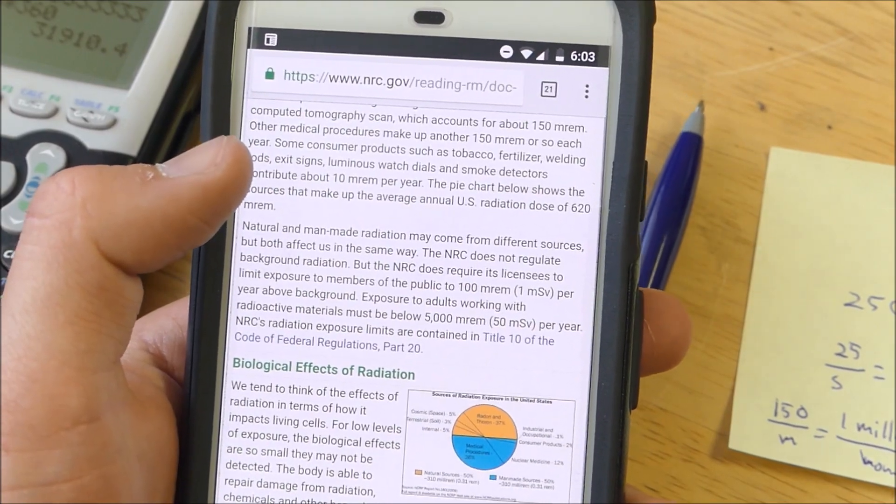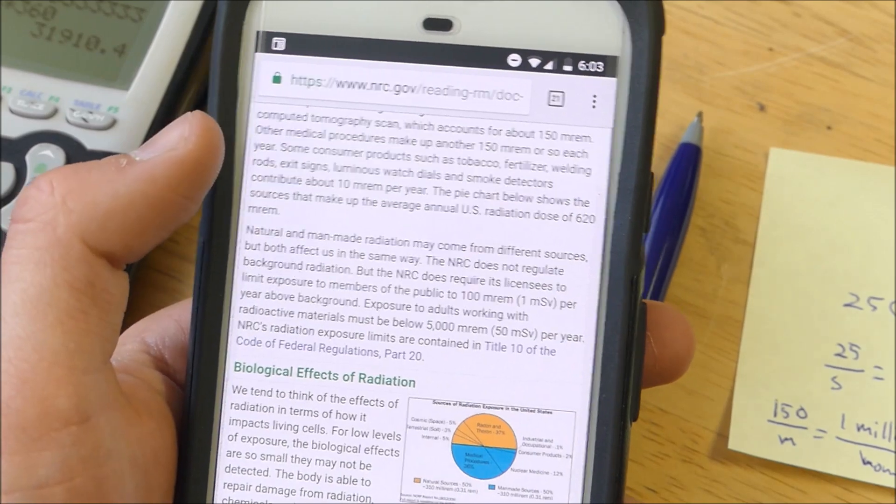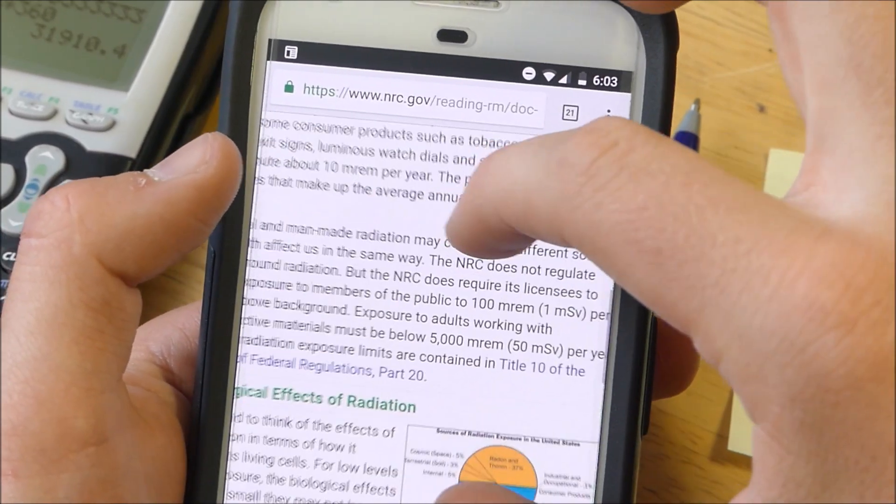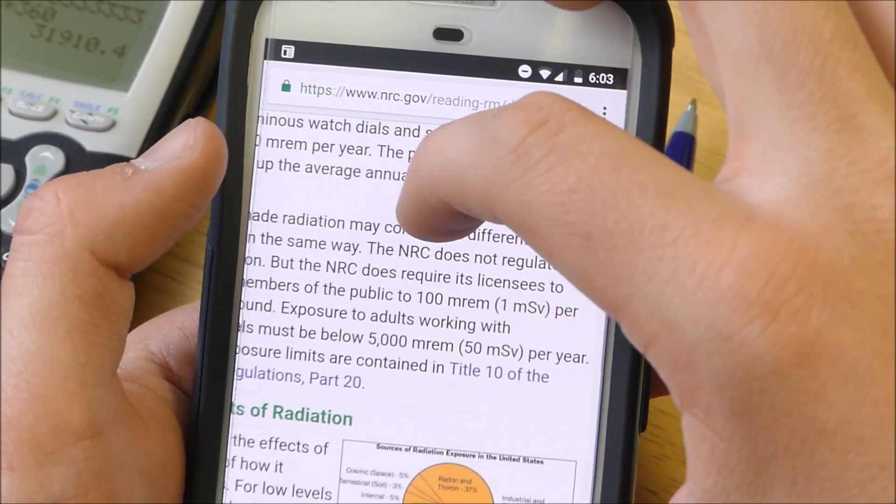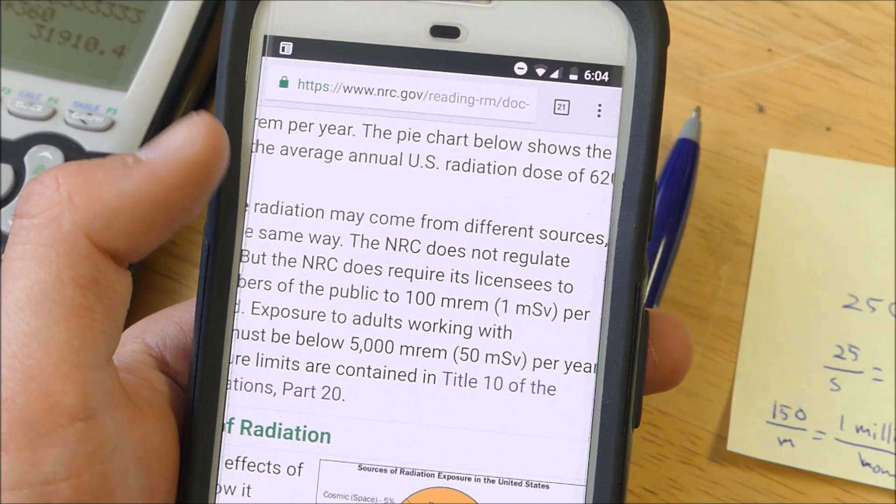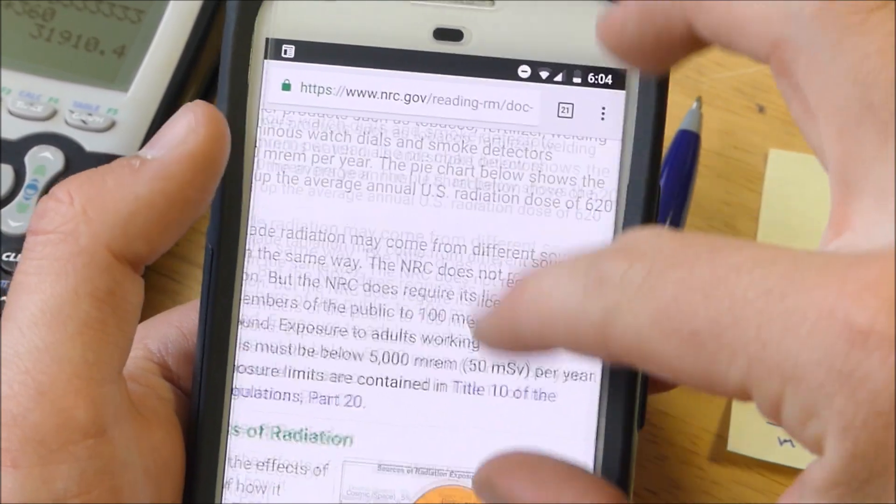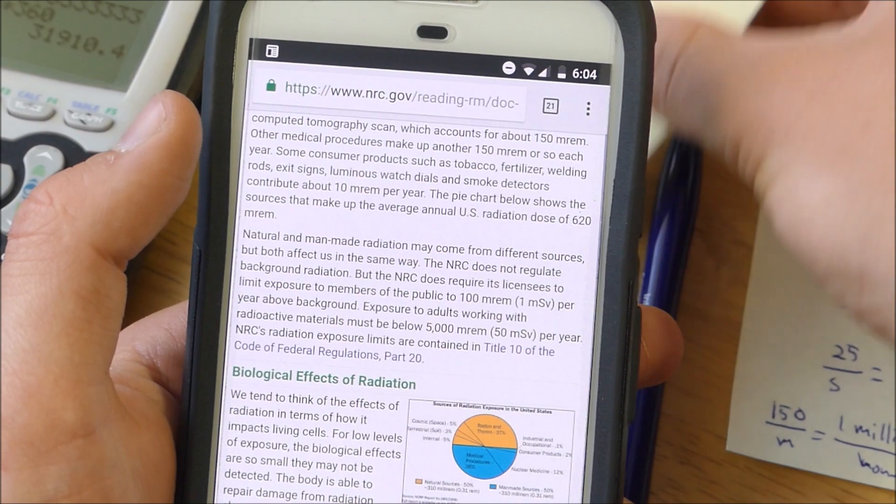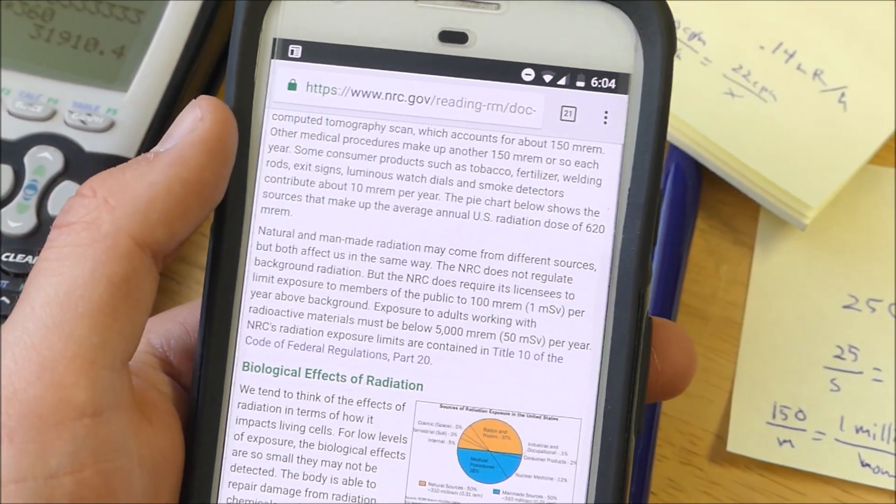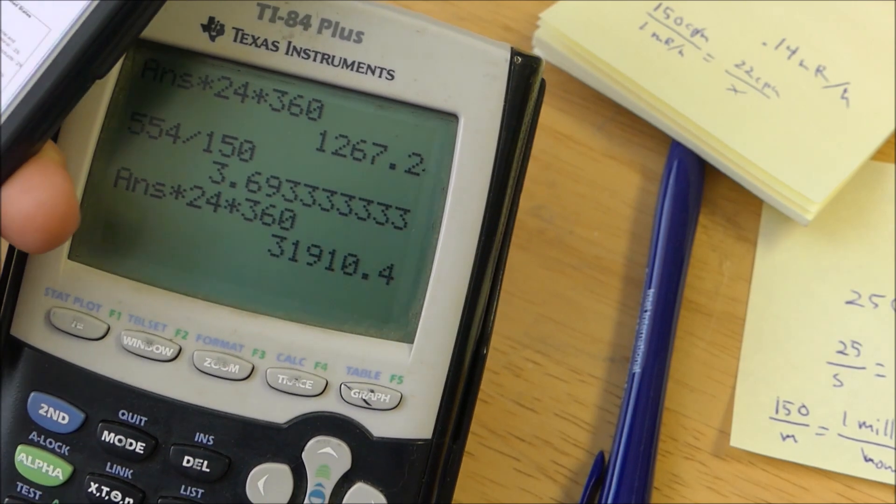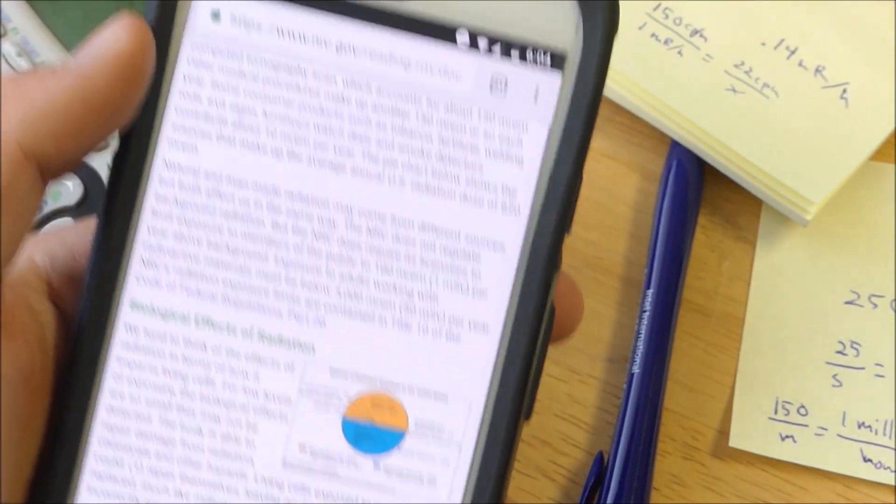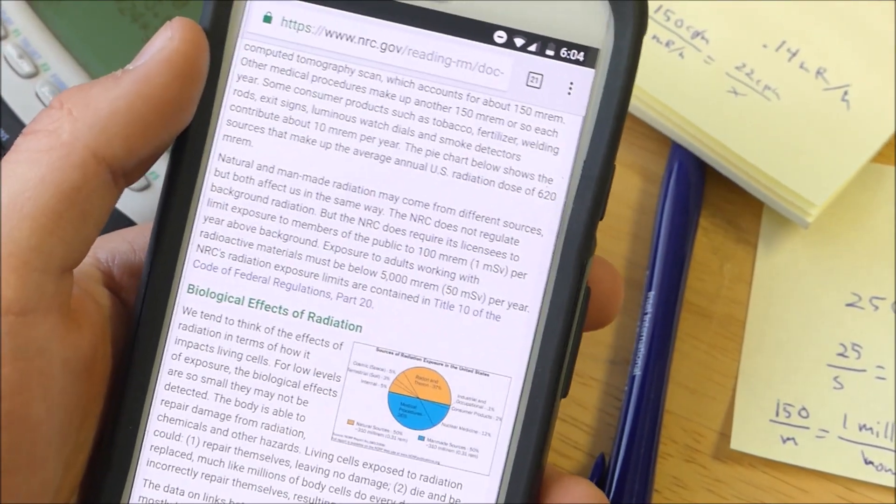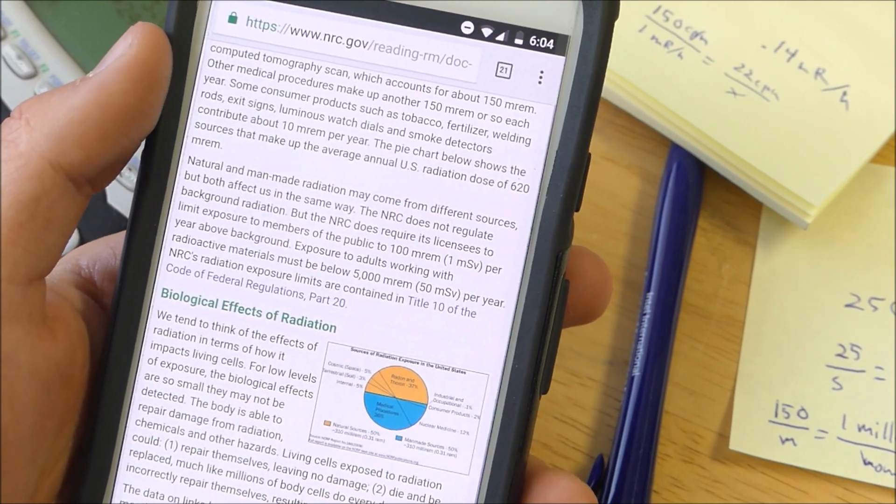Alright, this is pretty funny. According to this article on a government website, it says that the exposure to adults working with radioactive materials must be below 5,000 millirems per year. Look at this. If I sat next to that americium source, according to my calculations, that would be 31,000 millirems per year, which is 6 times the legal limit for people working with radioactive materials.